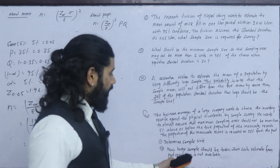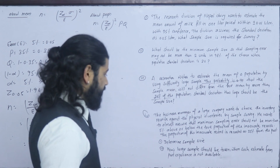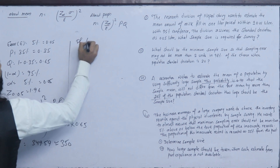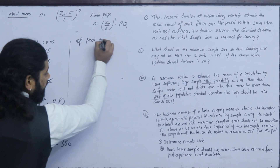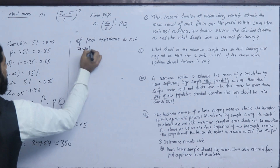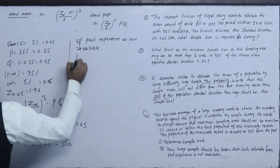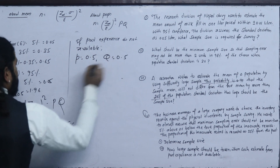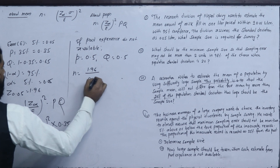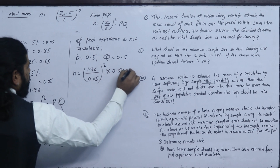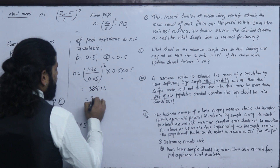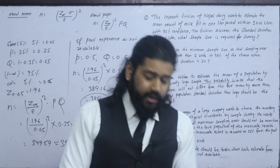Second part: How large should the sample be when past experience is not available? If no past record is available, we use P = 0.5 and Q = 0.5. With z = 1.96 and e = 0.05, we calculate the sample size accordingly.